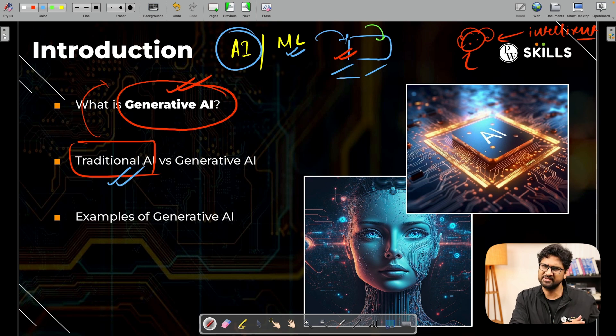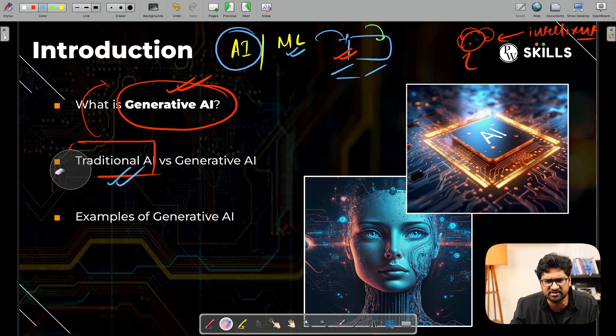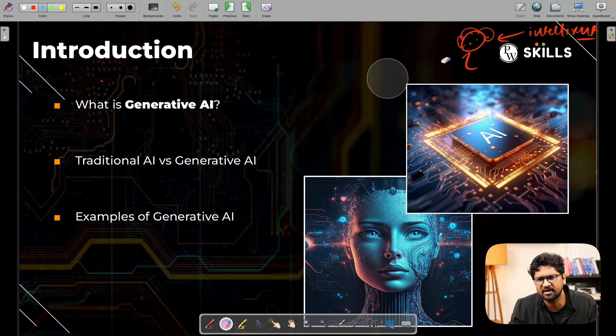AI has been there for many years, right? So why is there so much buzz around generative AI now?